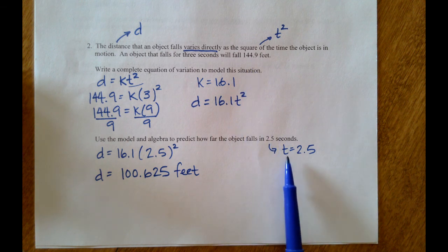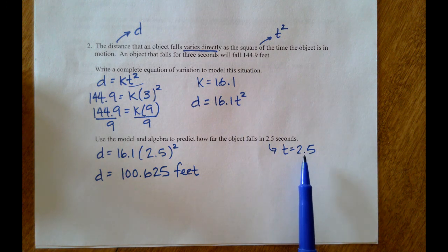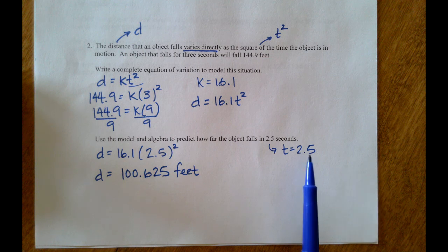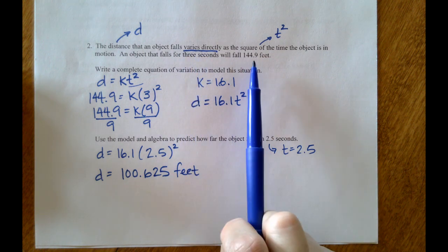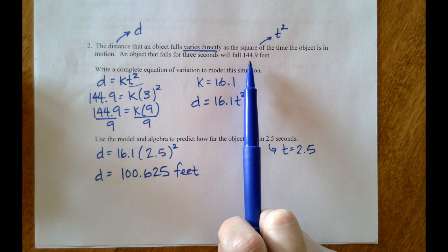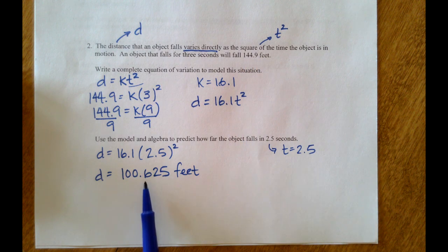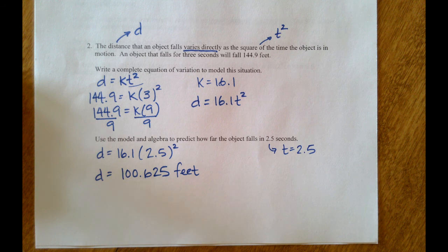As a quick check: at 3 seconds the object fell 144.9 feet. Ultimately we were asking about 2.5 seconds, so the time decreased. That means because of direct variation, the distance should also decrease. We were at 144.9 feet and with 2.5 seconds we're at 100.625 feet, so we went in the correct direction.